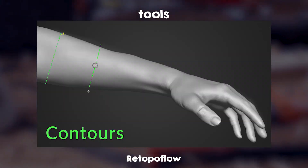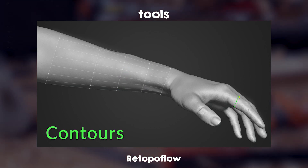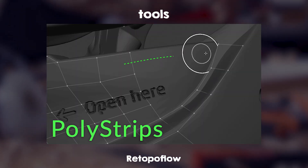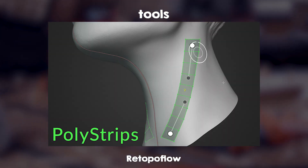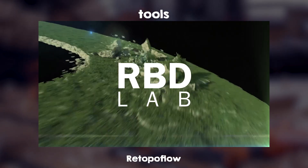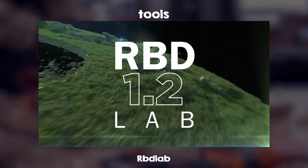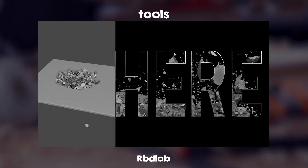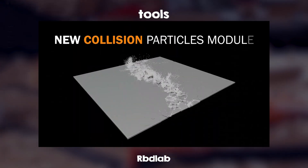3DS Max has a great retopo tool. Blender doesn't. Retopo Flow brings the same feature and adds its own twist, so you have a retopo tool in Blender — simple as that. RBD Lab: if you are breaking stuff, fracturing, or making rigid body simulations, RBD Lab is what you get. It handles the fracturing, destroying, simulation, and everything for VFX.